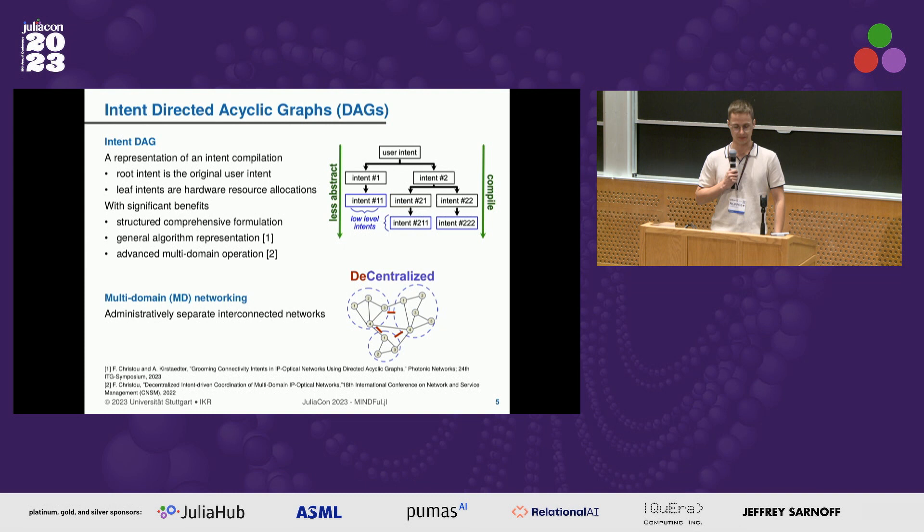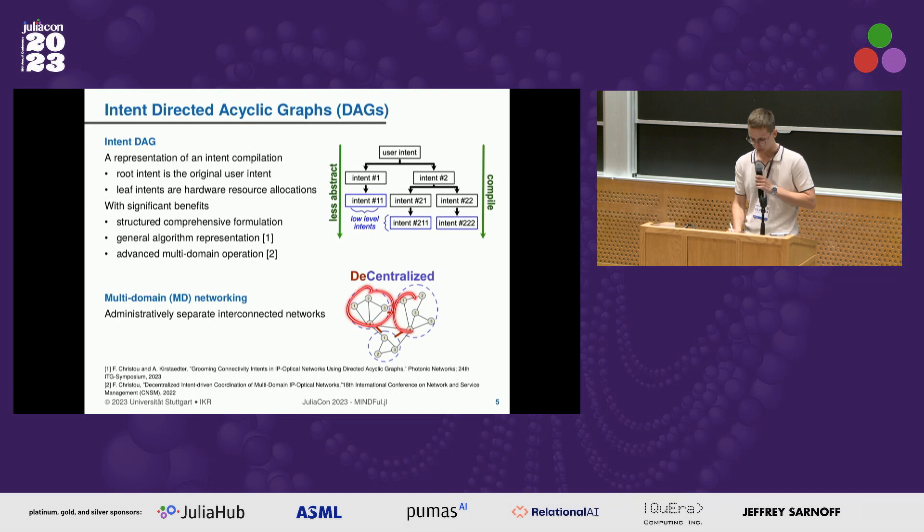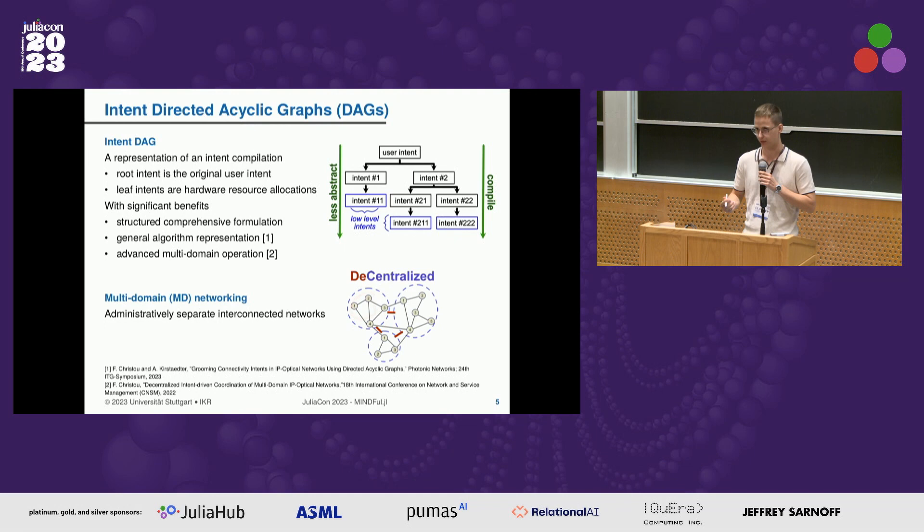When I talk about multi-domain networking, I mean administratively separate interconnected networks where, as you see in the figure, each domain will belong to a different organization. To have interoperability, everybody will need to work in a decentralized fashion, even though internally the domains could work centrally with the SDN software-defined networking paradigm.